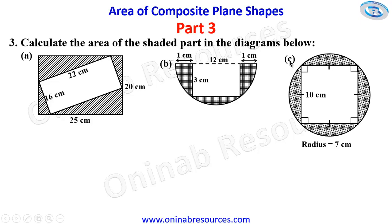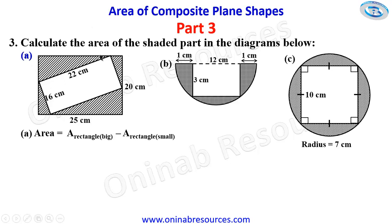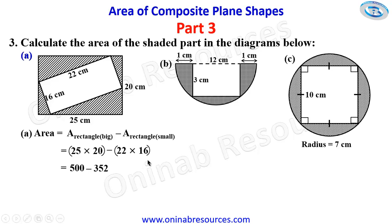Problem 3: calculate the area of the shaded part in diagrams A, B, and C. For A, we calculate the area of the big rectangle minus the area of the small rectangle (the unshaded region). Area of the large rectangle: 25 times 20 = 500. Minus area of the small rectangle: 22 times 16 = 352. So 500 minus 352 gives 148 square centimeters, representing the area of the shaded part in 3A.